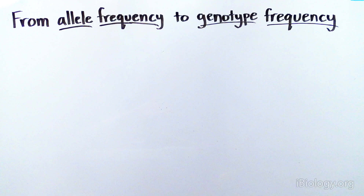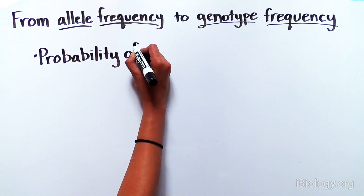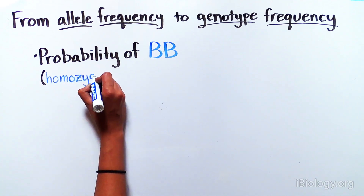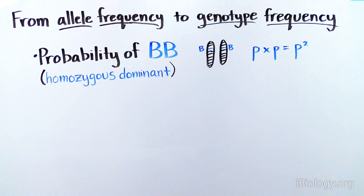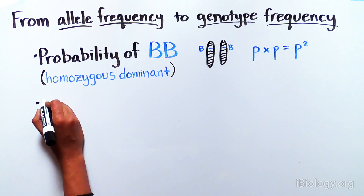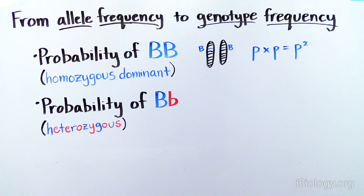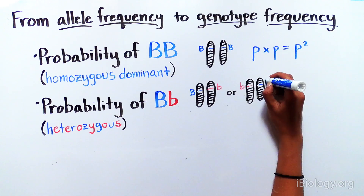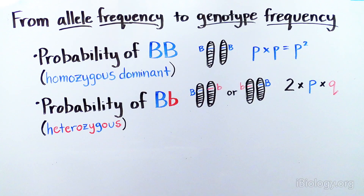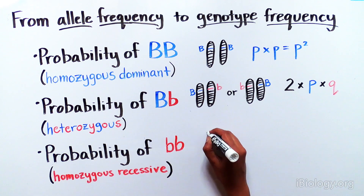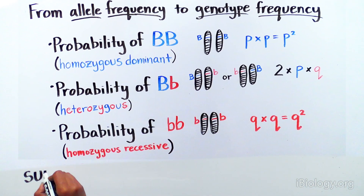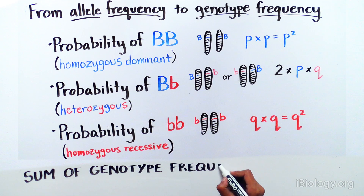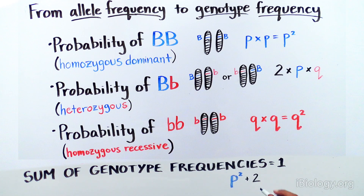Now let's relate this to genotypes. The probability of having an individual that is homozygous dominant — having both alleles as capital B — is P times P equals P squared. The probability of being heterozygous, having one capital B and one lowercase b, is 2PQ. And the probability of being homozygous recessive is Q times Q equals Q squared. The sum of the genotype frequencies must also equal one: P squared plus 2PQ plus Q squared equals one.